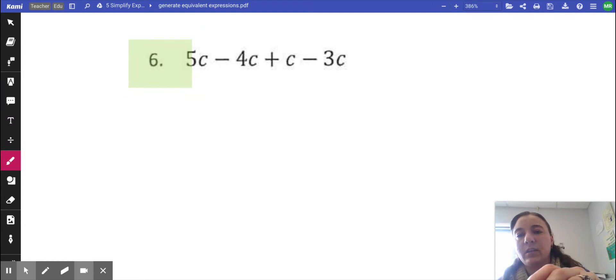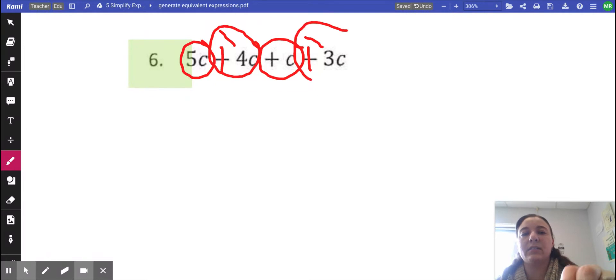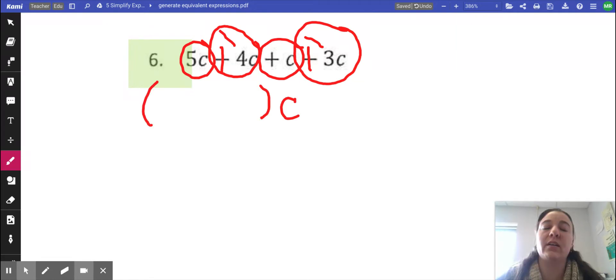Rule number one is to change any subtraction to adding the opposite. I see two subtractions. The opposite of a positive four is a negative four, and the opposite of a positive three is a negative three. Now I'm going to circle first because I like to. Are there any other C's? There is all C's. I got negative four C, positive C here, negative three C here. So all of them are C's.